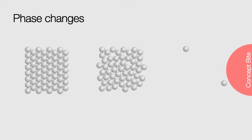The solid has strong intermolecular interactions and long-range order. Liquids have slightly less strong intermolecular interactions. Energy in the form of heat was required to break the intermolecular bonds. For a gas to form, if we consider it ideal, we have to completely break the intermolecular interactions, again requiring energy in the form of heat to break the bonds.